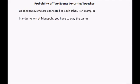Dependent events are connected to each other. For example, in order to win at Monopoly you have to play the game. If you don't play the game you can't win. The probability of finding a parking space depends on you driving in the first place. If you don't drive a car then there is not much point in finding a parking space.